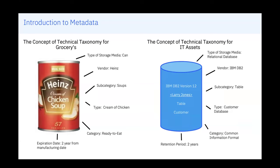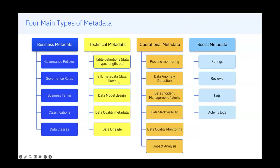From an IT asset perspective, metadata could be the definition of your tables, your columns, data types, retention period, how long you want to store the data, and so forth. That's the basic fundamental of what metadata is — you often hear 'data about data.' When you talk about metadata, it's not only the technical metadata. You have four different types: business metadata — which is governance policies, governance rules, business taxonomies, the data dictionary, classification, and semantic labels.